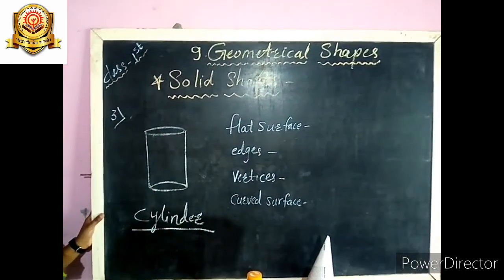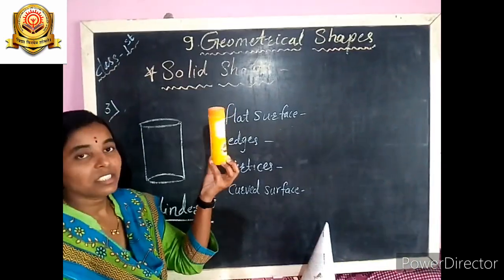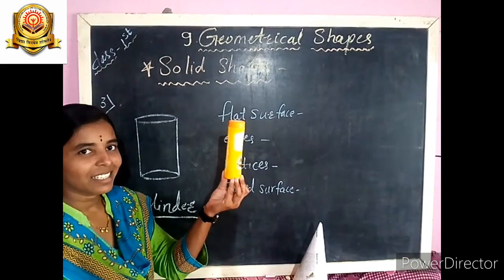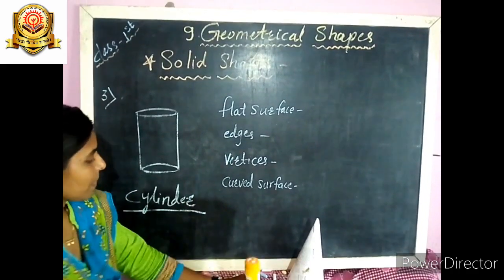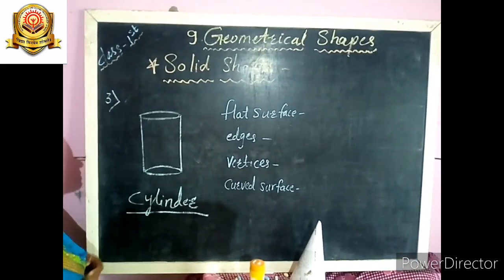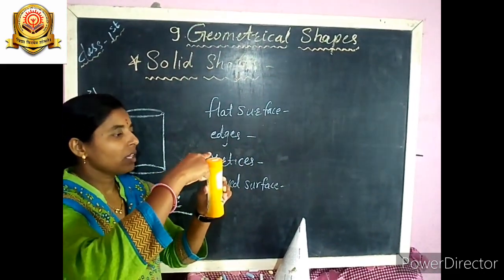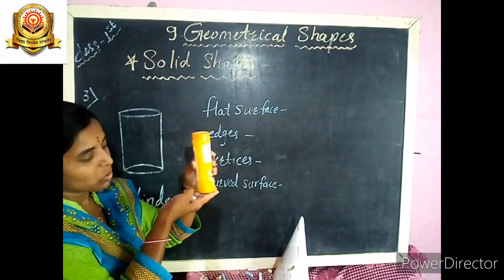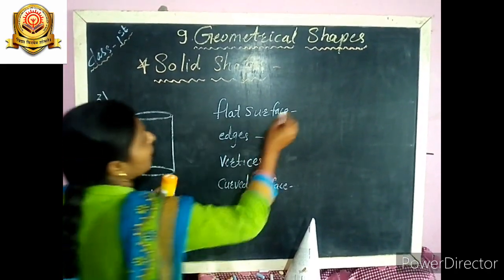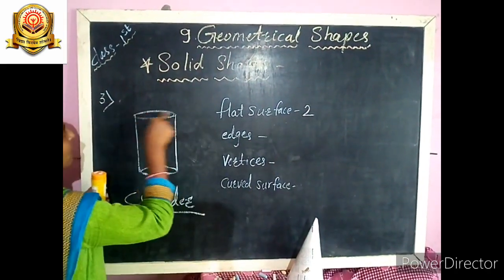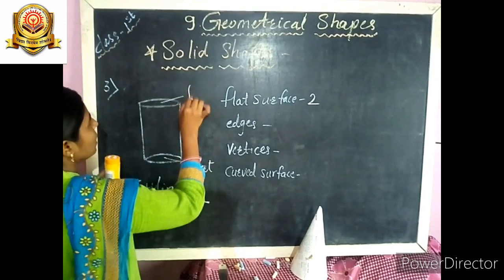Our third shape is cylinder. Look at this — what is the shape of this object? Yes, it looks like a cylinder. This cylinder has how many flat surfaces? This one and that one — 1 and 2. Cylinder has 2 flat surfaces.